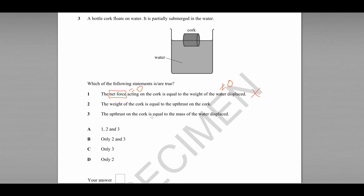Statement number two: the weight of the cork is equal to the upthrust on the cork. Now this is the Archimedes principle, we know this to be true, that the weight of the water displaced by a submerged object is equal to the upthrust acting on that object. So we can tick that, we know that statement two is correct.